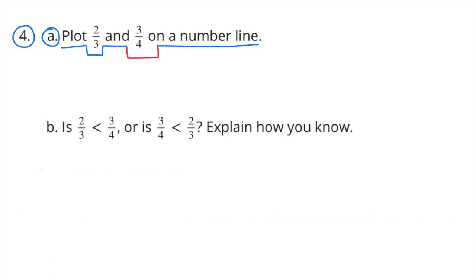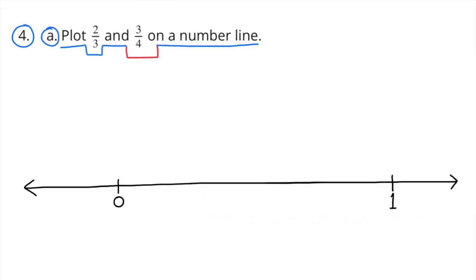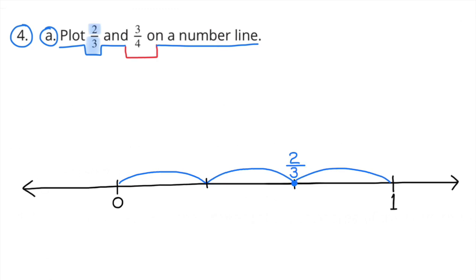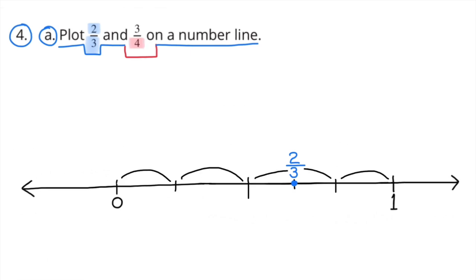Number 4, Part A: Plot 2/3 and 3/4 on a number line. Here I've made a number line from 0 to 1, divided into three equal sections. Directly on the end of the second section, I put a dot — that represents 2/3. Next, I divide the unit into four equal pieces. After the third section, I place a dot, and that represents 3/4.